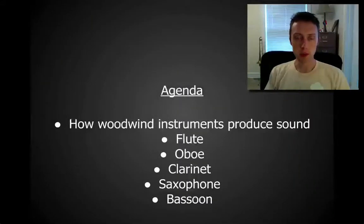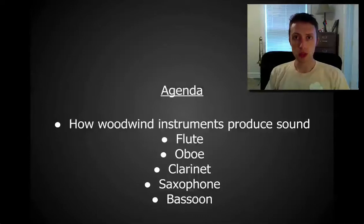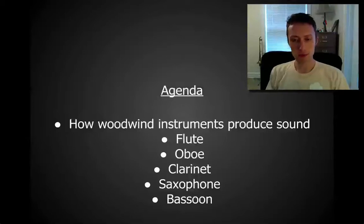So on the agenda today, we're going to talk about first how woodwind instruments produce sound, which is very important. Then we're going to talk about some of the woodwind instruments in a little more detail: the flute, the oboe, clarinet, saxophone, and then lastly the bassoon. We'll talk about those main instruments and then their related instruments as well.